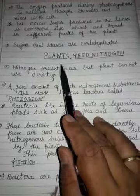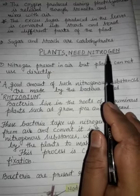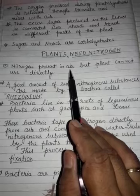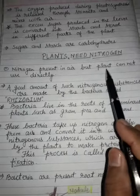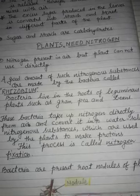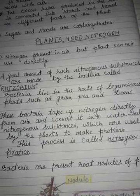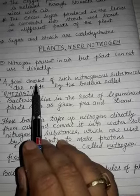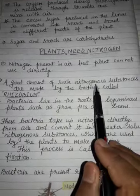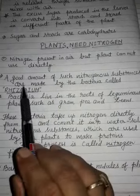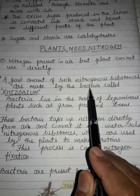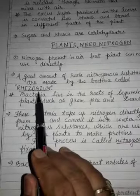Plants need nitrogen. Nitrogen is present in air but plants cannot use it directly. A good amount of nitrogenous substances are made by the bacteria called rhizobium.